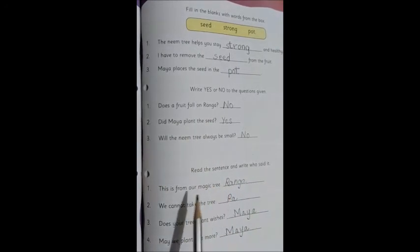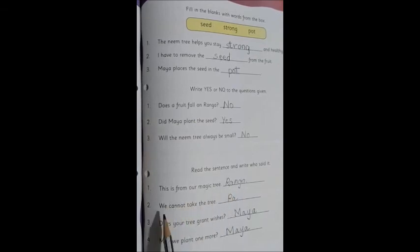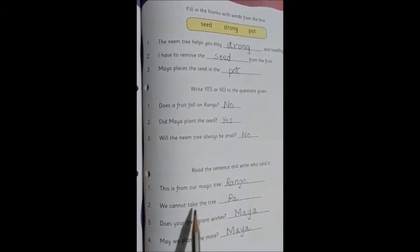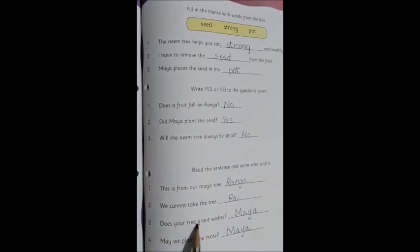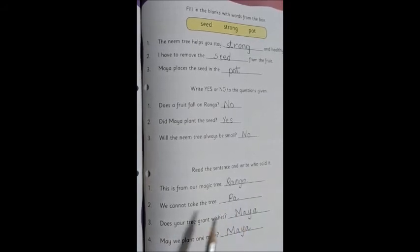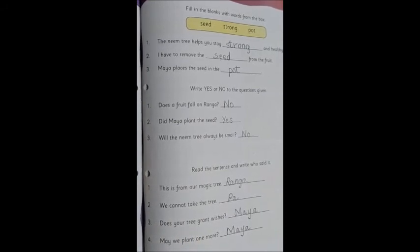Now the last one. Who said to whom? This is from our magic tree. Who said? Ranga. We cannot take the tree. Pa. Does your tree grant wishes? Who says this? Maya. May we plant one more? Who says it? Maya.